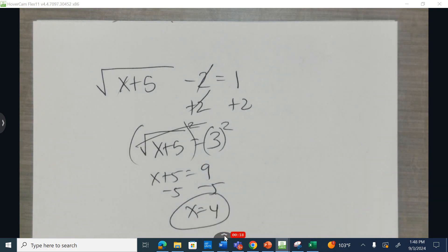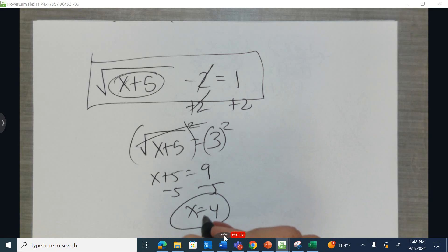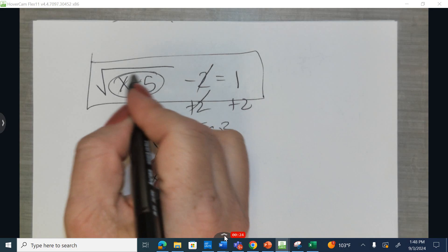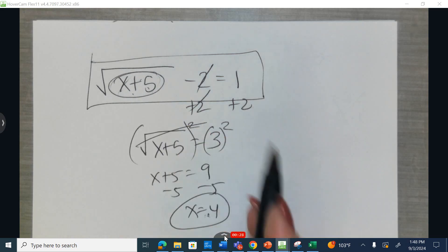But we have to make sure this works, because this original problem does have restrictions. Restrictions is after you plug in what you believe is the solution, and you do the work inside the radical, the value in here has to be 0 or greater. So let's check.